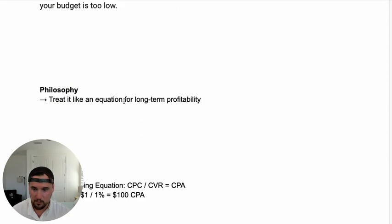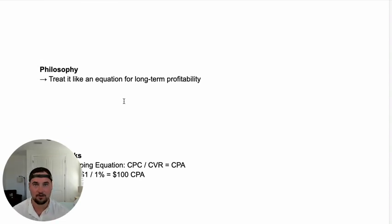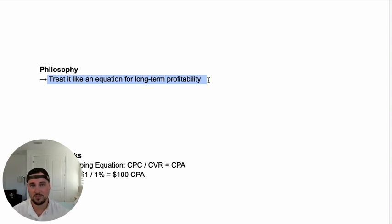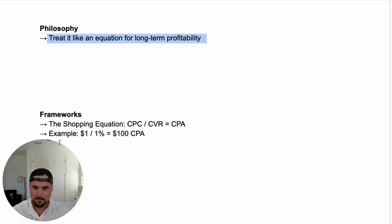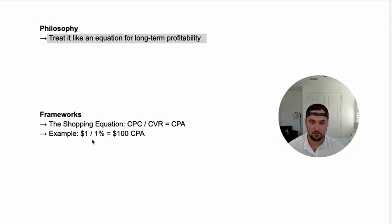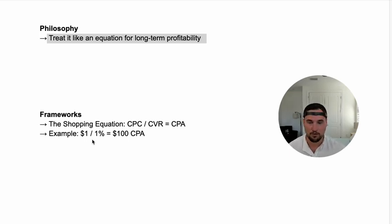Now that we have an idea of how we're going to look at our data, you need to treat it like an equation for long-term profitability. That's the philosophy of how I look at shopping ads. The framework is simple: CPC divided by conversion rate equals your desired CPA. This is how you make sure your CPCs are aligned with your conversion rates and you have a desirable CPA that's profitable.